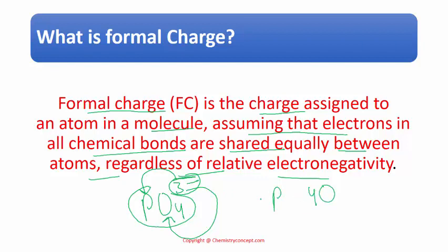But is it shared equally, or is there some rule to share this minus three charge over those phosphorus and oxygen atoms? And if it is shared, what percentage of that charge would be present on phosphorus and what percentage of that charge would be present on oxygen is called formal charge calculation.